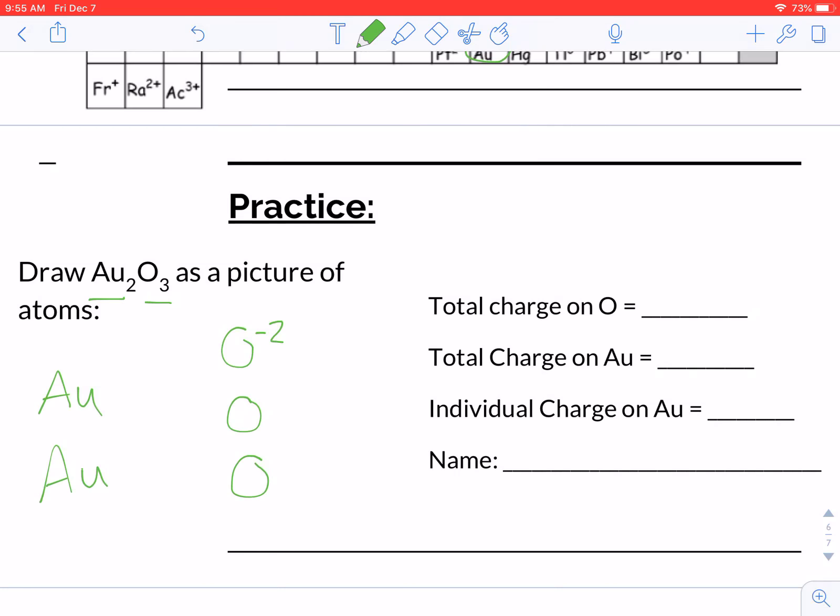So if oxygen is always negative 2, if you add all these up, that adds up to a negative 6 charge. So that means that these 2 gold atoms, or these ions, have to counteract that negative 6, which means that they need to add up to positive 6. So our total charges on oxygen, we said we're negative 6. Total charges on gold are positive 6. If we have 2 gold atoms, then that means that each gold has to have a charge of positive 3.